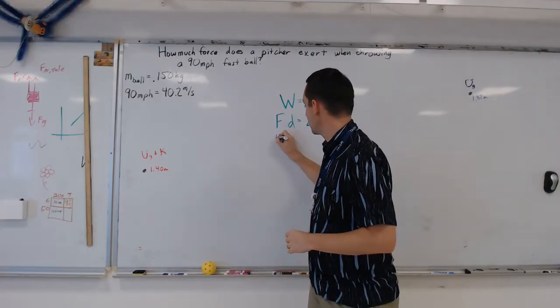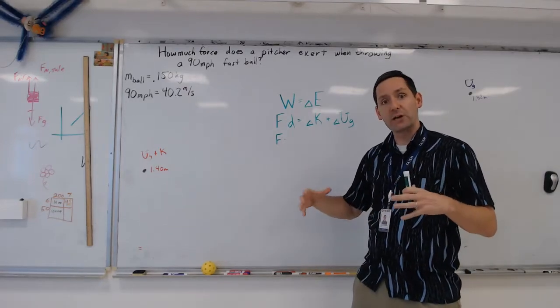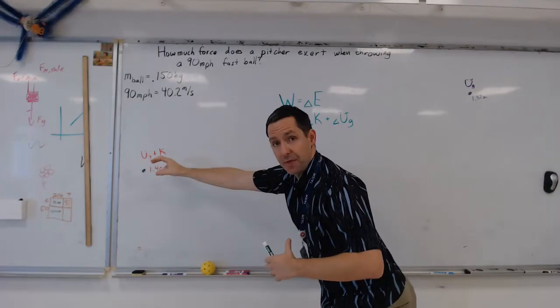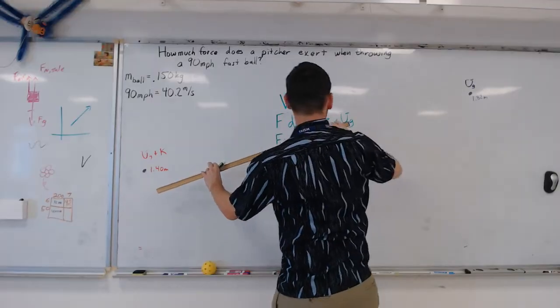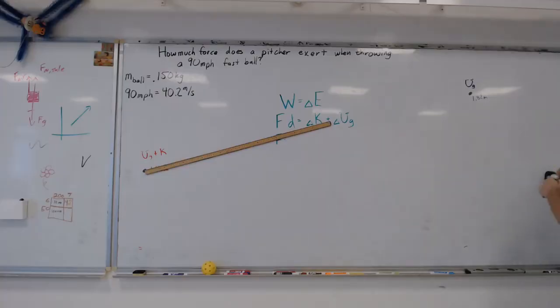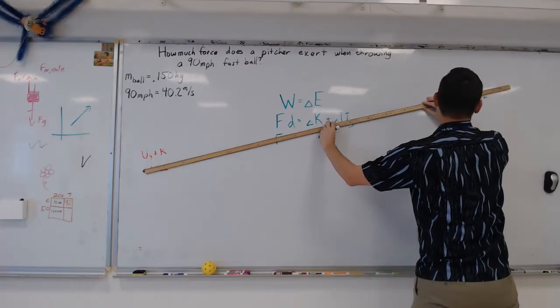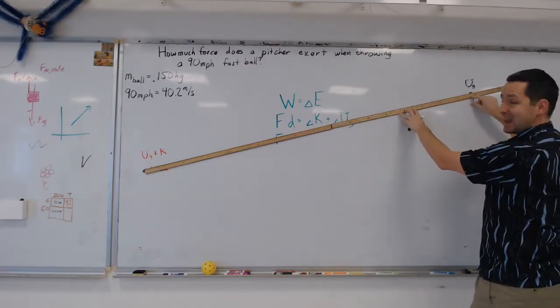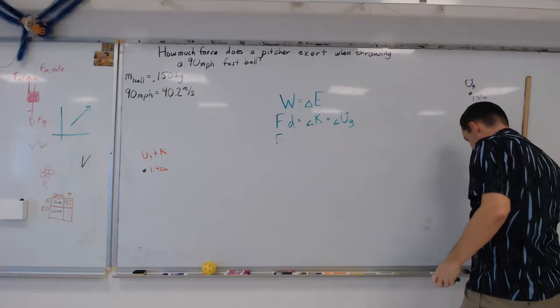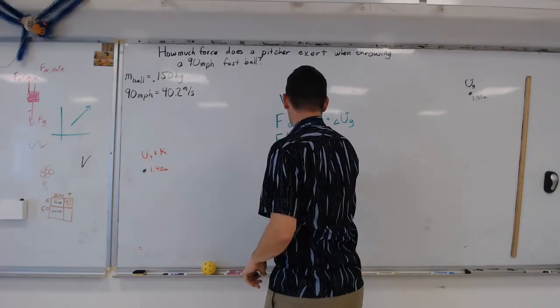I'm getting really close to where I can start putting some numbers in. The force, that's what I'm looking for. Distance is the amount of distance over which the pitcher exerts force. So that would be from here all the way down to there. Let's go ahead and see if we can measure that. I'm going to try to do my best just to measure from there all the way across. Looks like it's 1.78 meters.